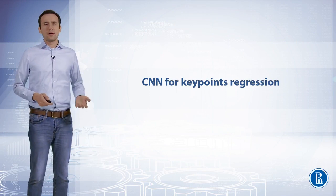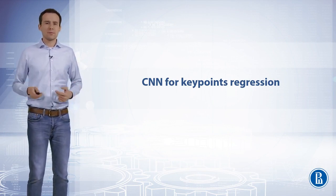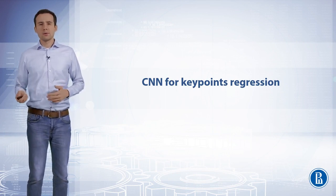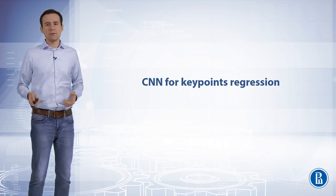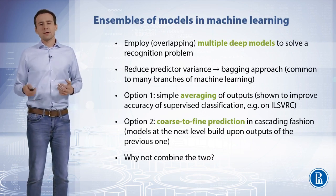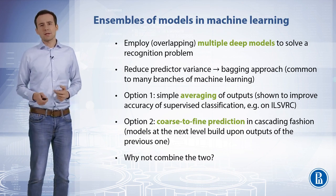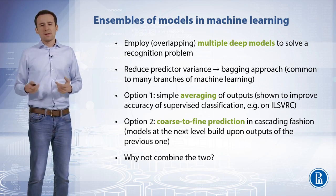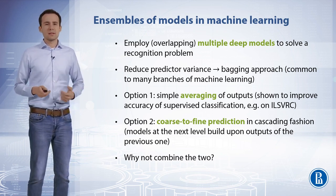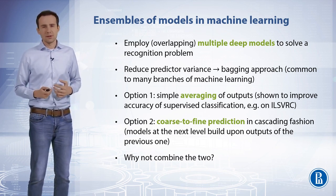In this video we're going to learn how one can approach facial keypoint regression within the deep learning framework. In order to describe a more stable and accurate approach, we consider the ensemble of models. Ensembles of models in machine learning employ multiple deep models to solve a single recognition problem. It is in many ways similar to the bagging approach because it is capable of reducing the predictor variance, and that's very common to many branches of machine learning.